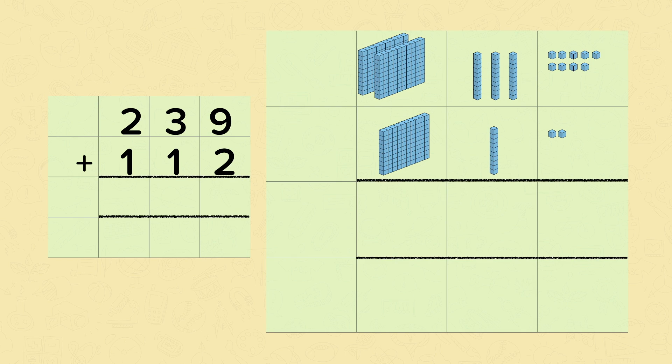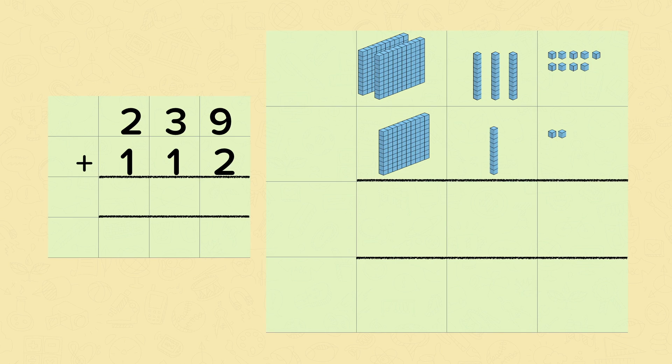Now let's go through another example using some pictures to help us. So here we've got 239 add 112. The pictures represent these numbers. So the first thing that we're going to do is add the ones.